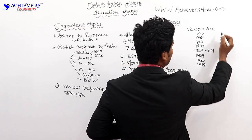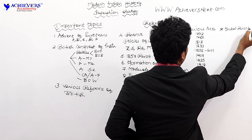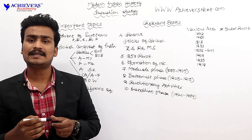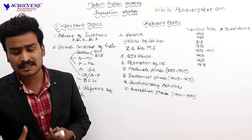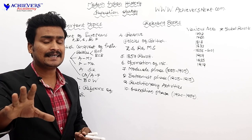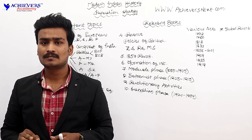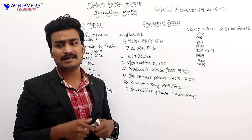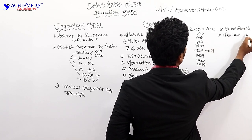Another important topic is Tribal Revolts. Not only nationalist leaders and common people, but even tribals revolted against British rule. For each revolt we need to know: which tribe revolted, what was the reason, who was the leader, and in which area the tribe was located. These are the key questions asked regarding tribal revolts.